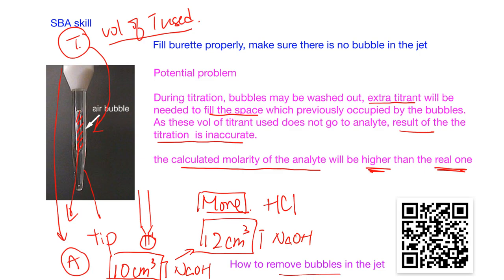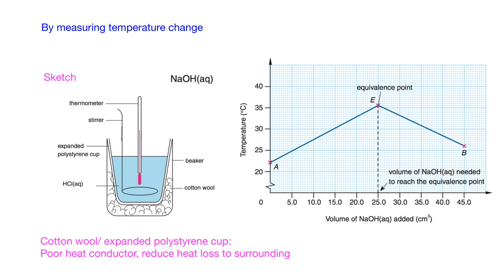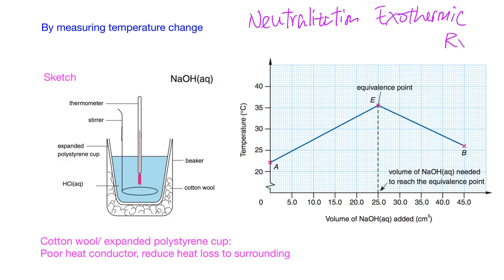To remove the bubble in the jet, you can check the QR code provided. Other than measuring the pH change, we can also observe the temperature change in the process to find the equivalence point. As you all know, neutralization is an exothermic reaction, so when we mix acid and alkali together the temperature should go up.